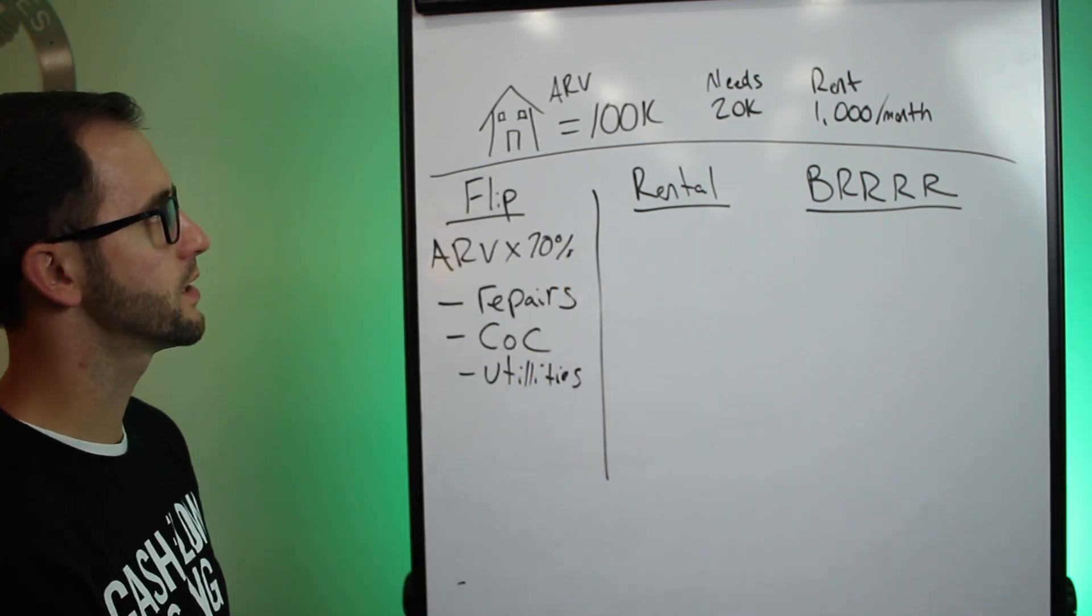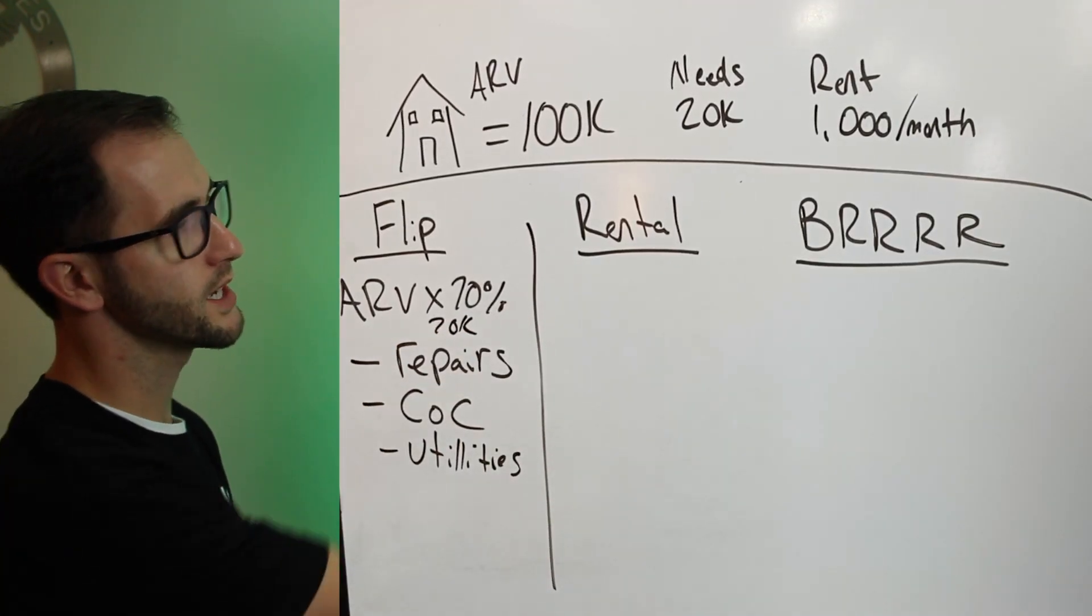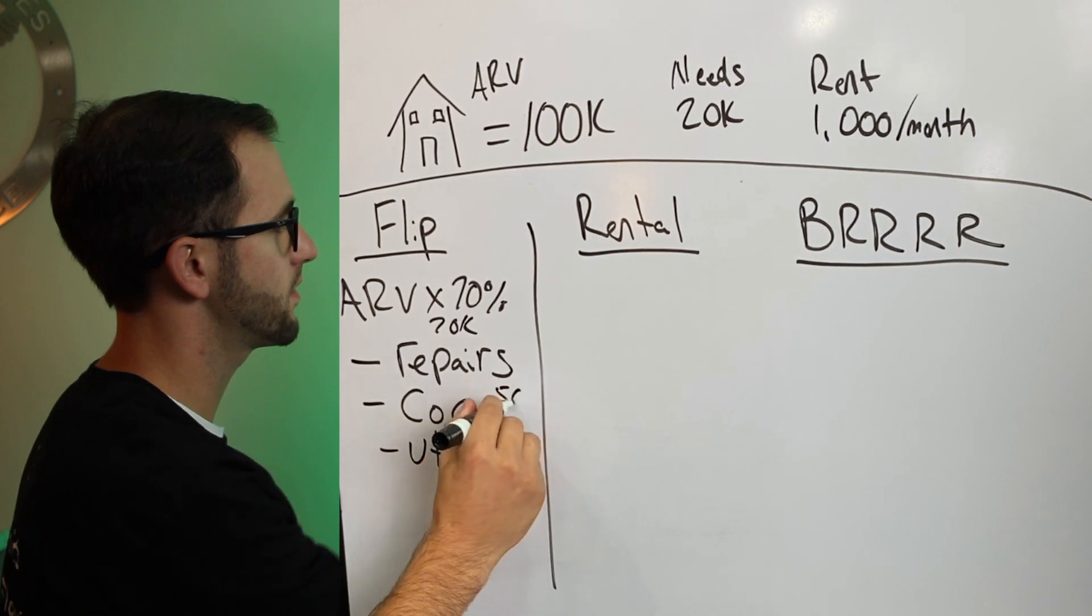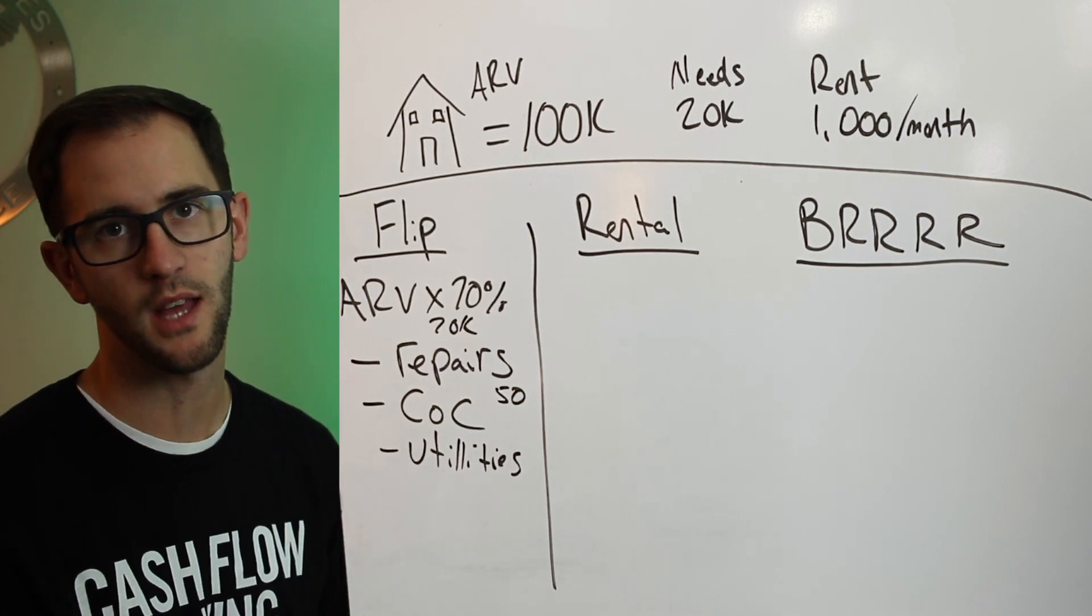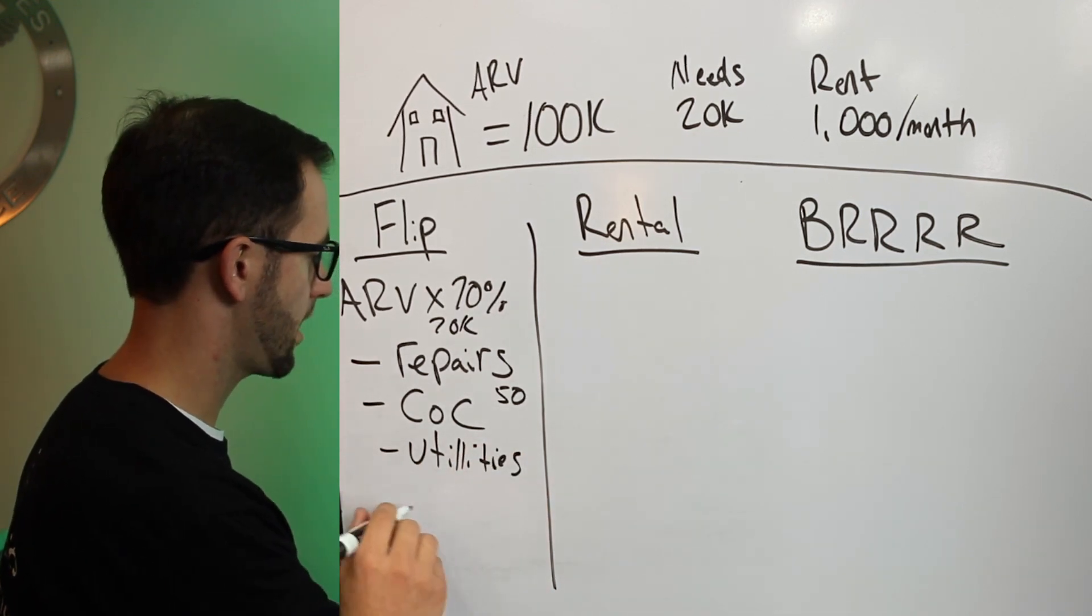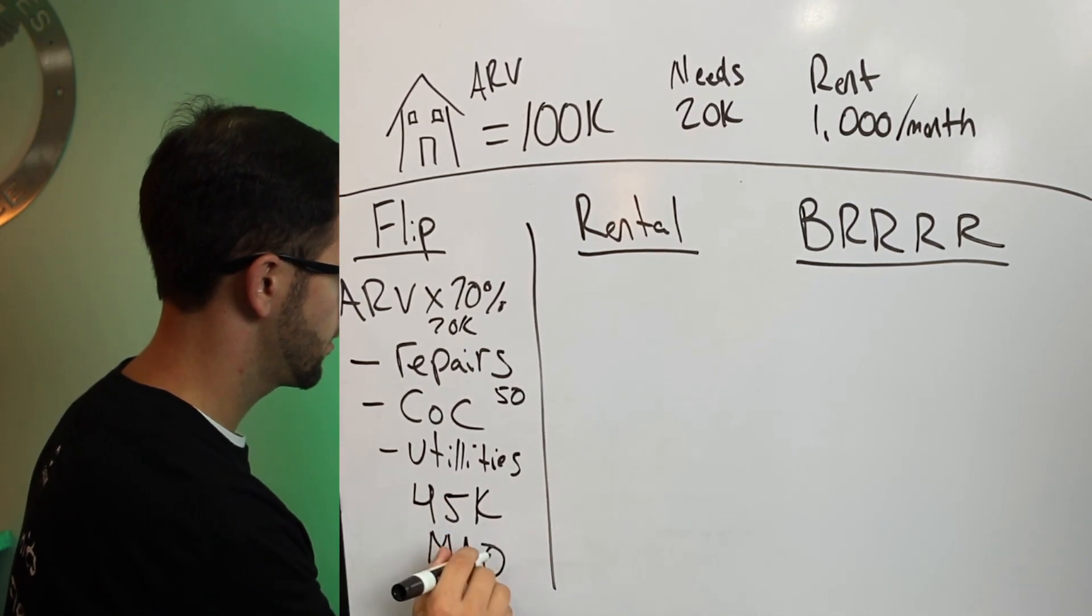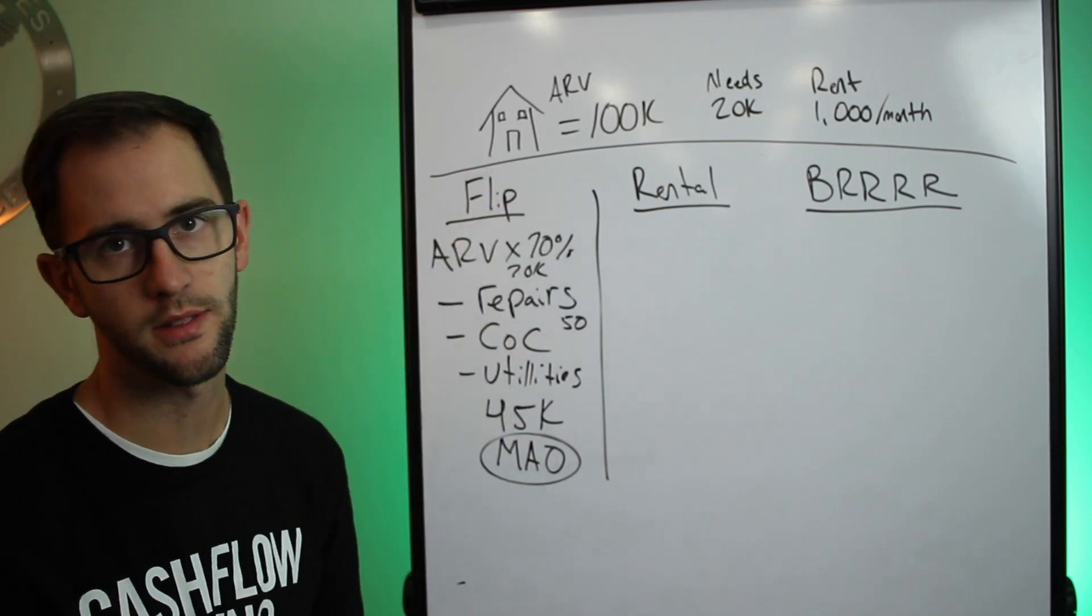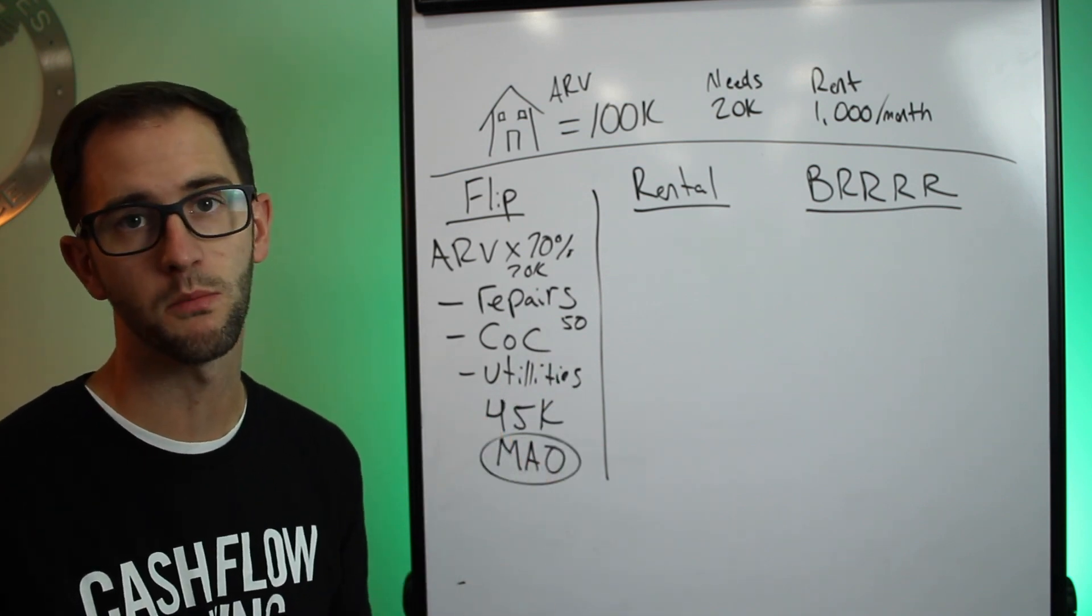All right, so if we're going to look at this deal here, $100,000 at the 70% rule, that gets you to $70,000. We said before this property needs $20,000. So now we're down to, after repairs, we're down to $50,000. And then for cost of capital and utilities in this example, we're just going to use $5,000. So this would be a $45,000 max allowable offer. If we were going to flip this property and be able to sell it for $100,000, only putting $20,000 into it, paying back our cost of capital and utilities, we'll typically turn a good profit at these numbers.